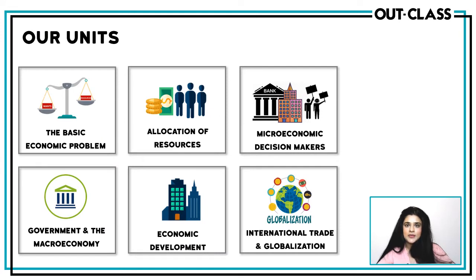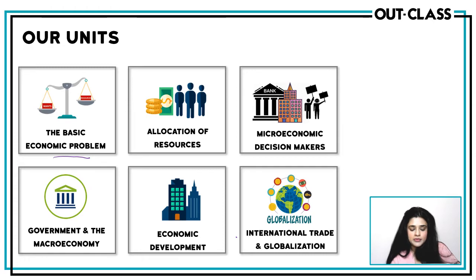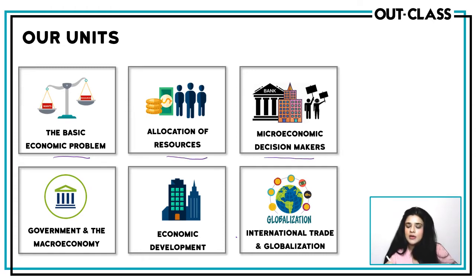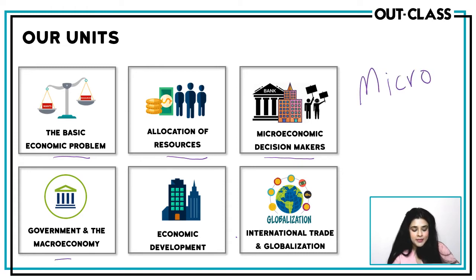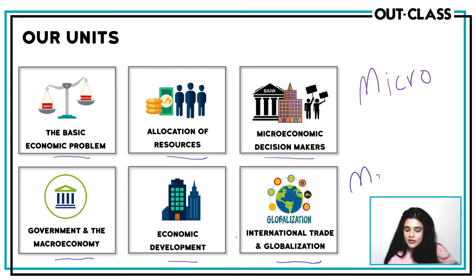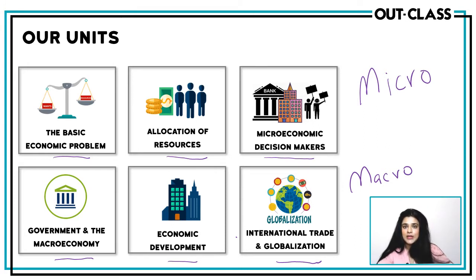These units comprise your Economics syllabus. The first three — the basic economic problem, allocation of resources, and microeconomic decision makers — form microeconomics, while government and the macroeconomy, economic development, and international trade and globalization form macroeconomics. In this course, you should know all the definitions, the concepts, as well as the application of the concepts taught, and be able to apply them to scenarios or case studies on your exam paper.